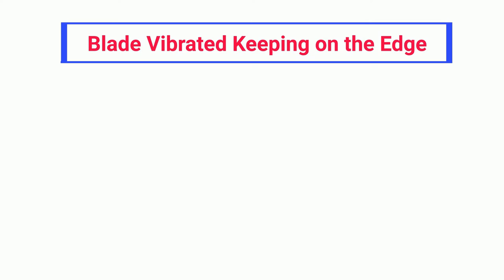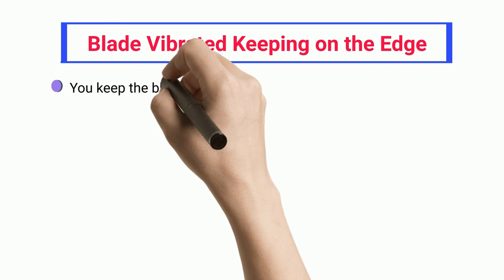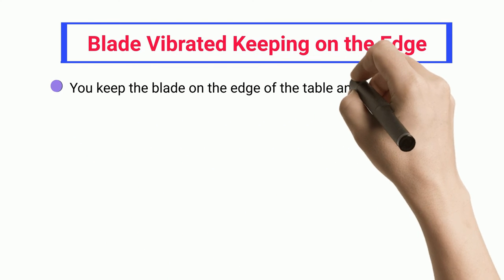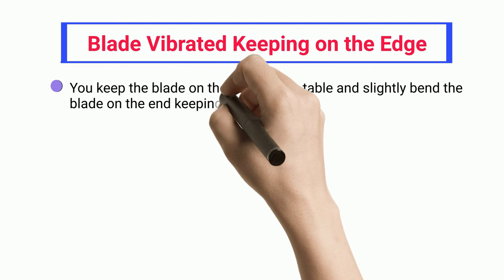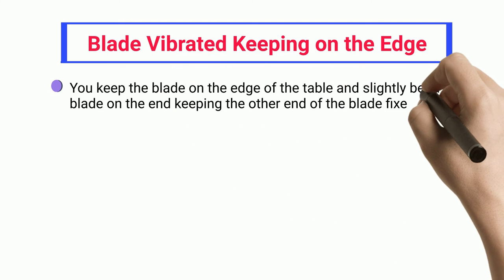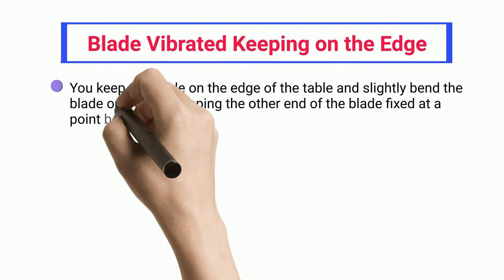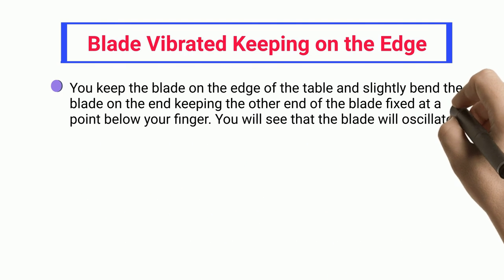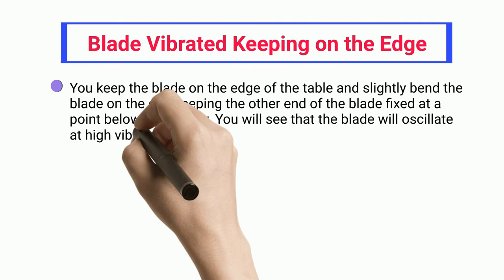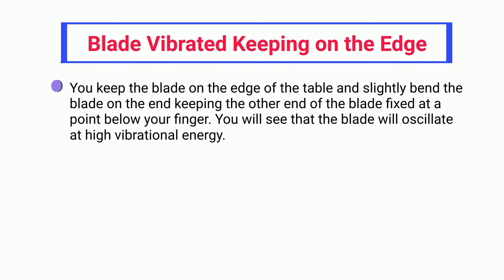Blade Vibrated, Keeping On The Edge. You keep the blade on the edge of the table and slightly bend the blade on one end, keeping the other end of the blade fixed at a point below your finger. You will see that the blade will oscillate at high vibrational energy.